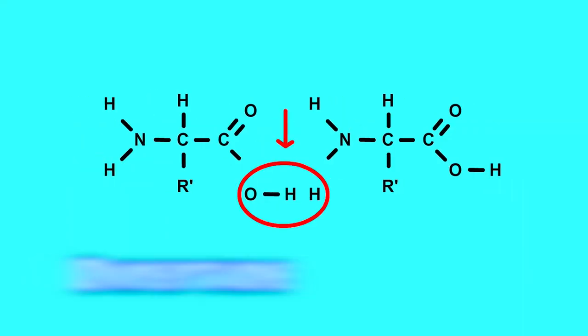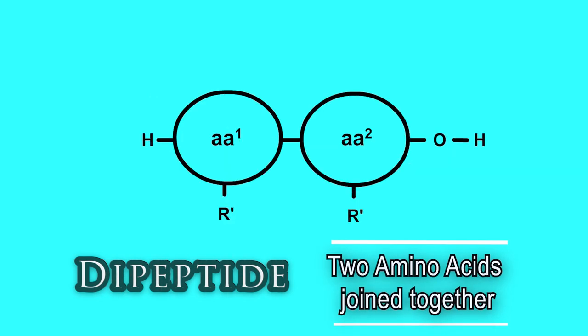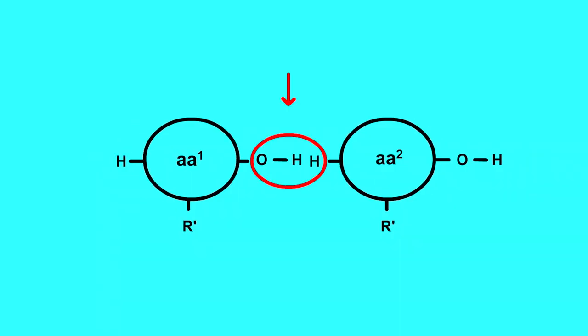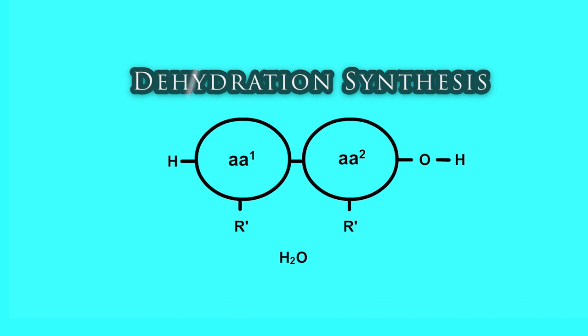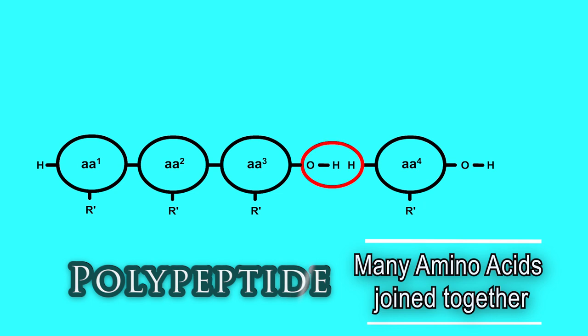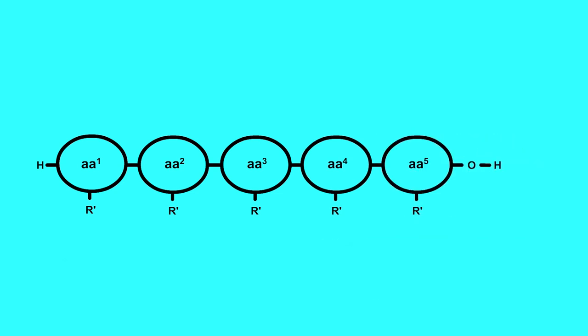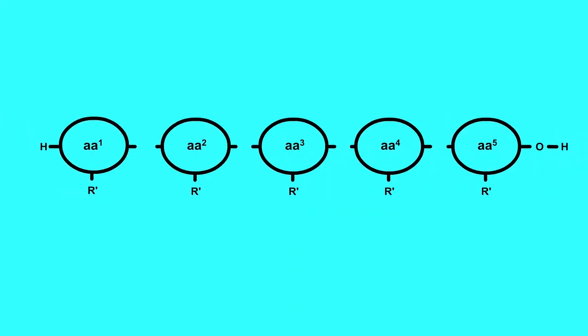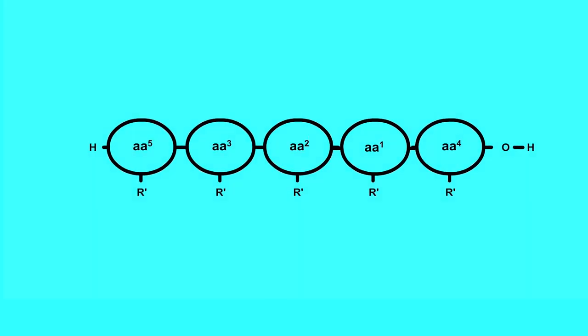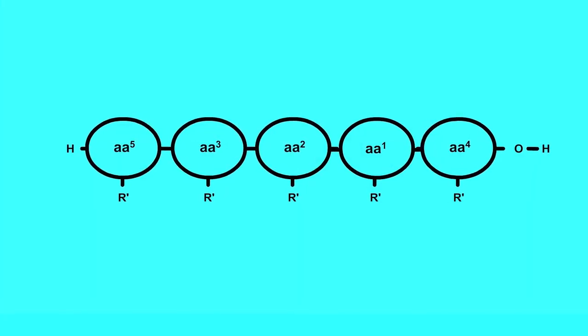When your body takes two amino acids and links them together, we get a dipeptide. What holds a dipeptide together is a peptide bond. Notice when we join two amino acids, a water molecule falls out — remember dehydration synthesis? We can link more amino acids together, forming a chain called a polypeptide. The sequence of amino acids in a polypeptide is critical. What makes one protein different from another is the order that the amino acids go in — rearranging those amino acids into a different order gives you a different protein.